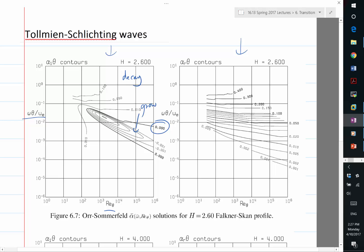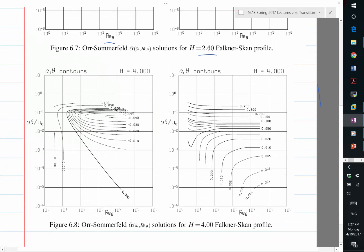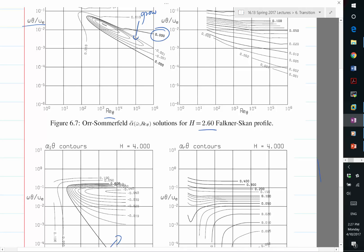This is for H equal to zero, basically the Blasius profile. If you look at H equal to 4, which is close to separation, you first see that the growth region is a lot bigger. If you look at the magnitude of the growth, this is minus 0.001, this is minus 0.04. So the rate of growth is 40 times higher. You need one-fortieth of the spatial length to have the same growth in H equal to 4 profile compared to a Blasius profile.